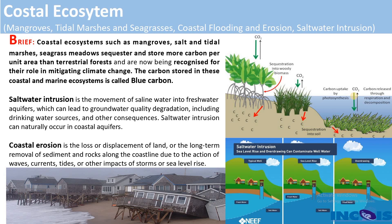The coastal ecosystem is generally the greenery and relevant habitat that we see along the coastline, such as salt marshes, mangroves, and seagrass — all the greenery along the coast and the relevant habitat that exists within it. This entire setup we generally call the coastal ecosystem.